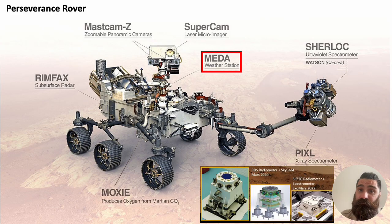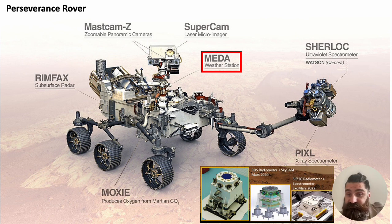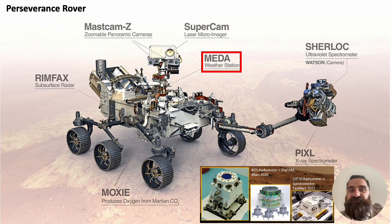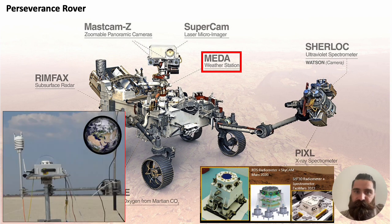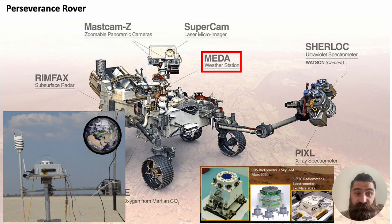This instrument is actually part of the MEDA weather station — it's on the Perseverance rover that is active on Mars right now. So the data coming from our extreme environment on Earth are fundamental in order to understand the data coming from another planet. The instrument we use on Earth is basically a copy of the one on the rover.